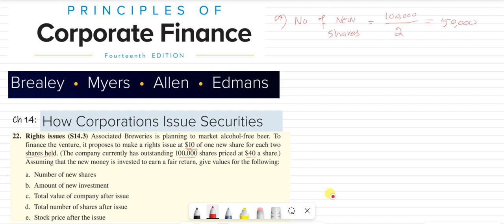Amount of the new investment. Part B, amount of investment. This is 50,000 shares times $10, which equals $500,000.